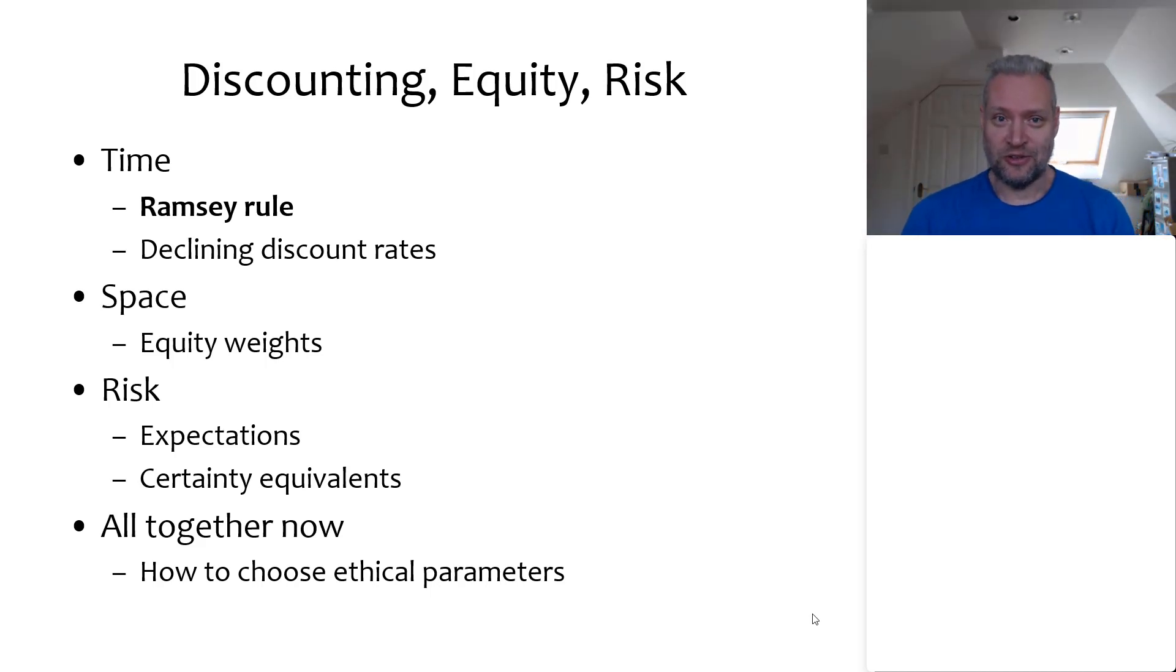But today we're going to talk about discounting, equity and risk, or what do we mean by optimality. I'm going to do so in five chapters, not in three as you may have guessed. The time aspect is going to be split into two because it's the longest. And then in the very end I'm going to add a chapter on putting discounting, equity and risk together and also talk about how do we actually choose these particular parameters.